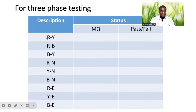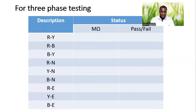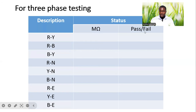For three phase, we will test between red phase and white phase, red phase and blue phase, blue phase and white phase, red phase and neutral, yellow phase and neutral, blue phase and neutral, red phase and earth, yellow phase and earth, and blue phase and earth. We register the value obtained in megaohms after carrying out the test, and then put the status — either pass or fail.